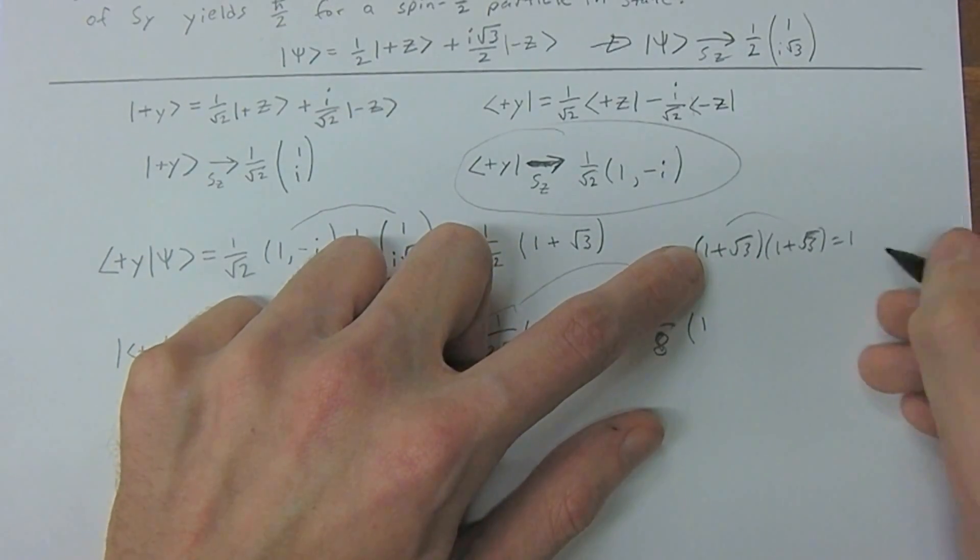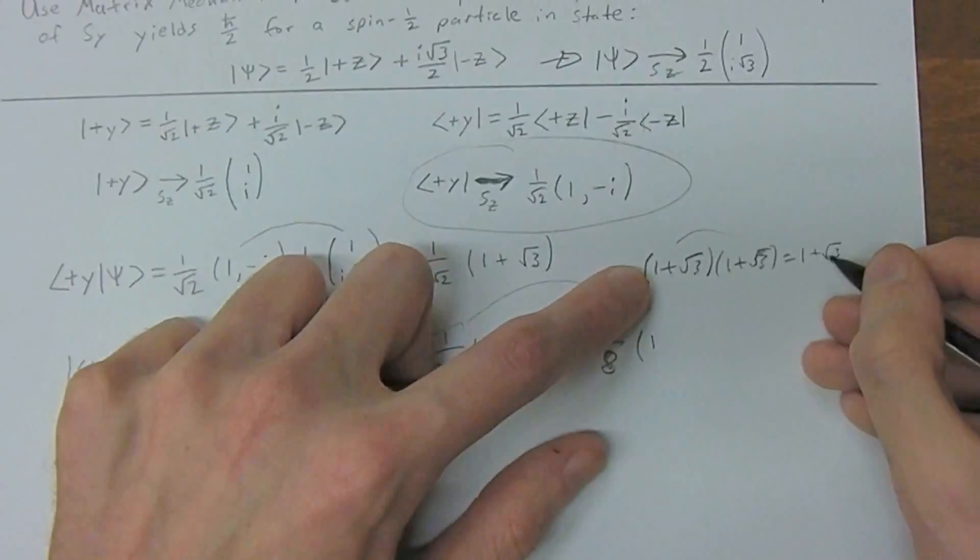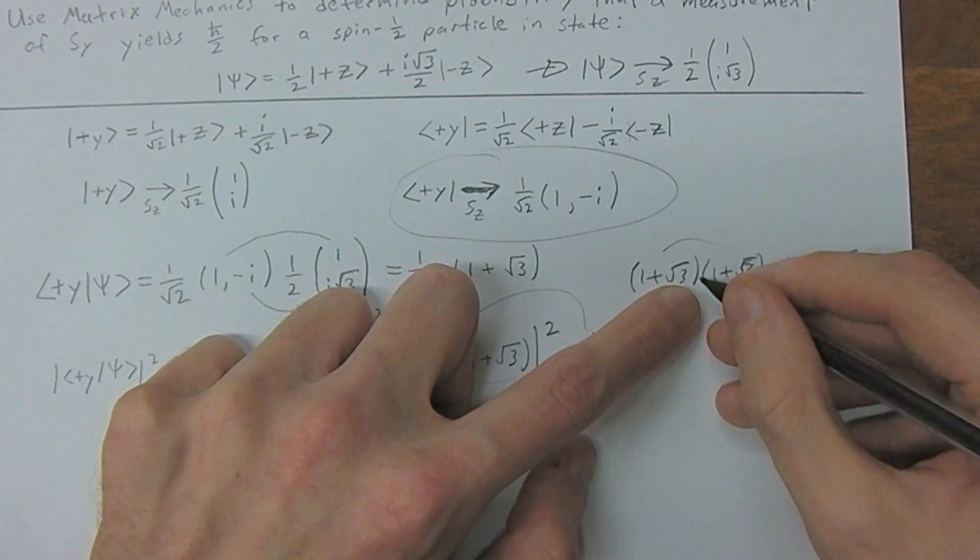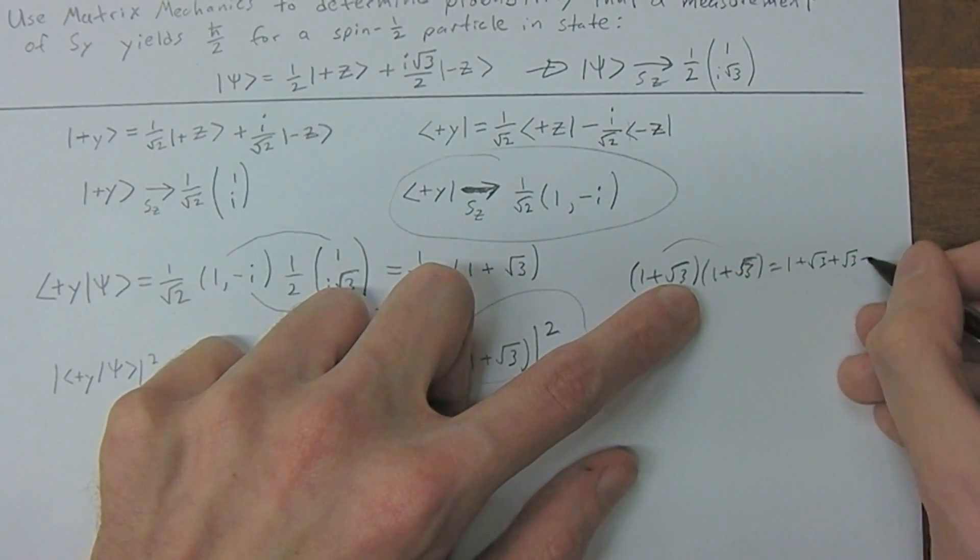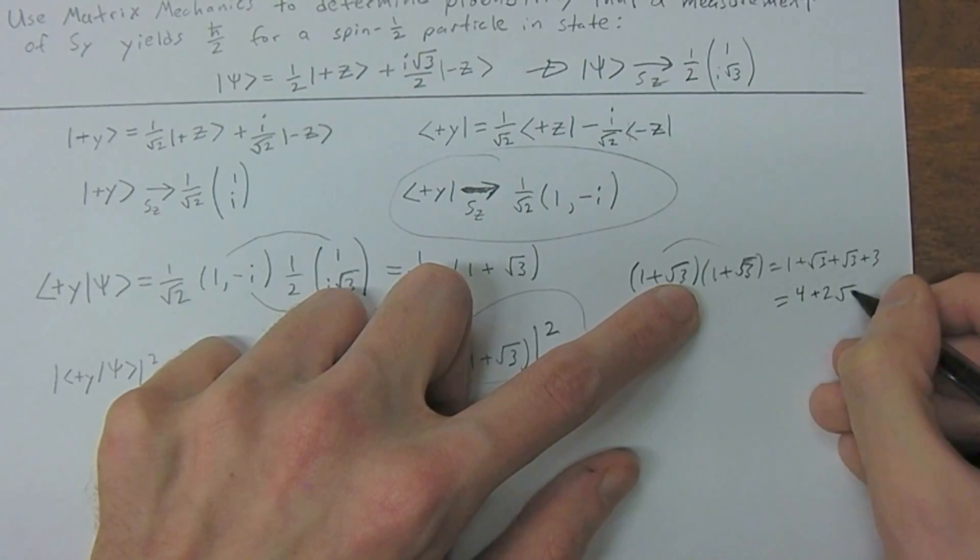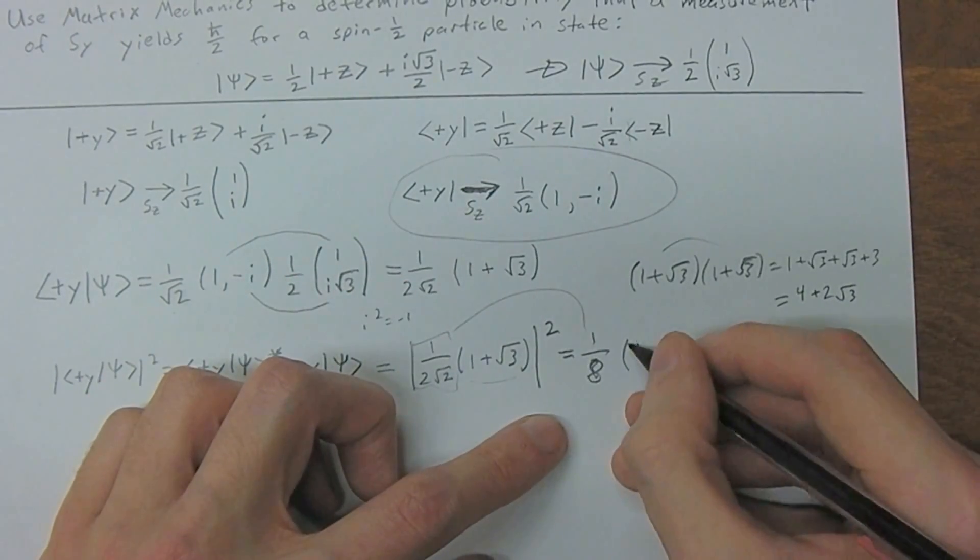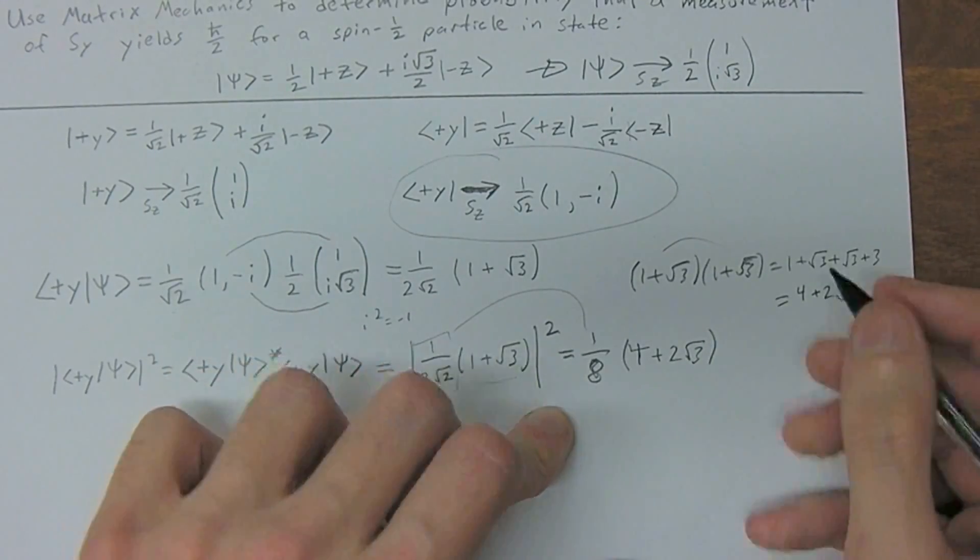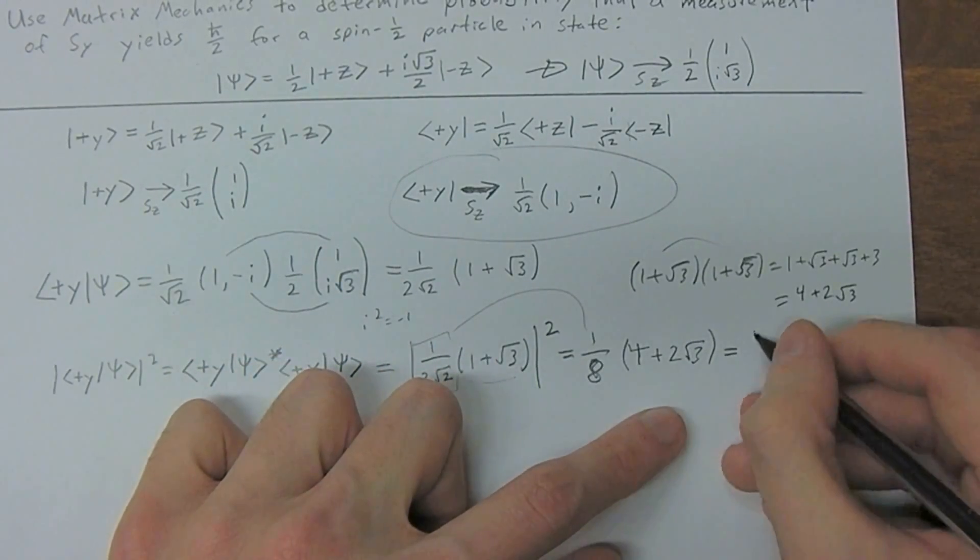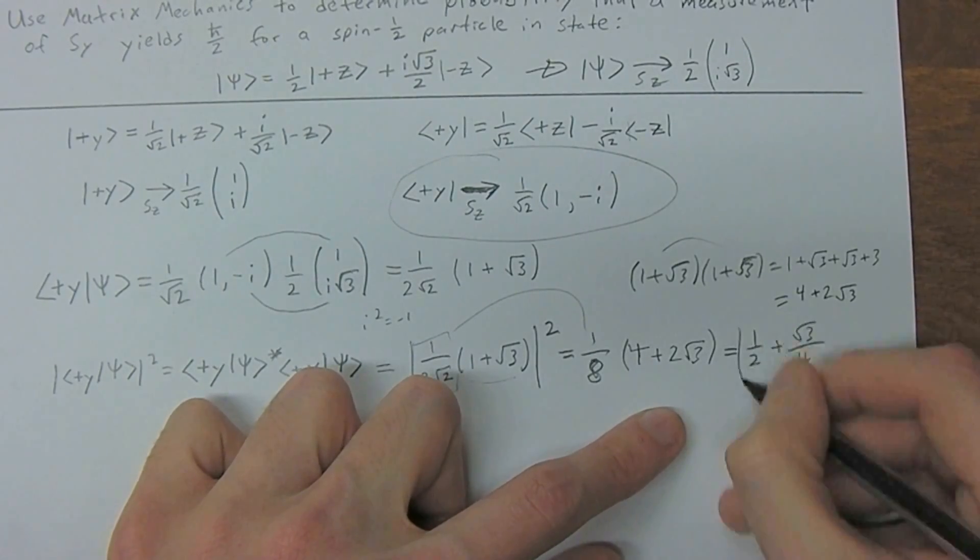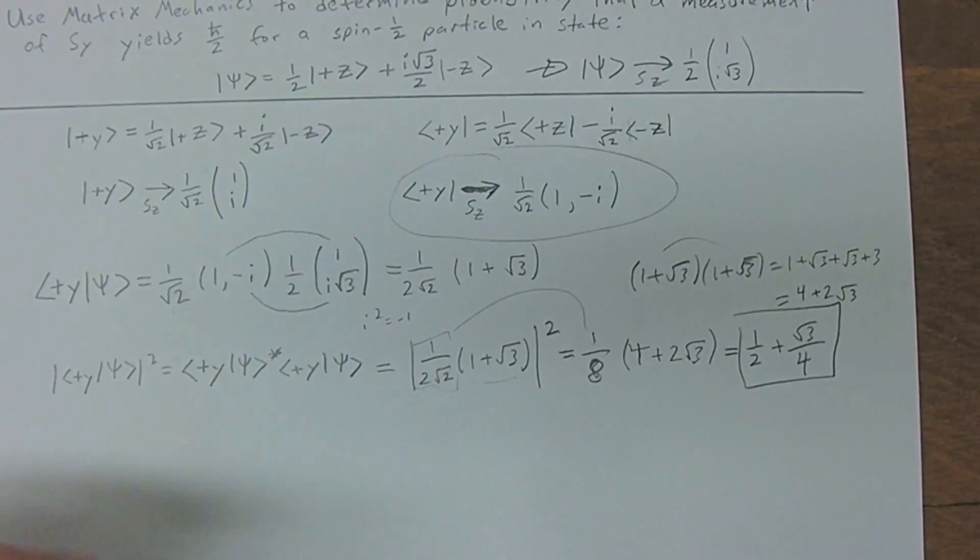so 1 times 1, 1 plus square root of 3 plus square root of 3 plus square root of 3 times square root of 3. So we're going to get 4 plus 2 square root of 3, and then we can simplify this again. So we're just going to get 1/2 plus square root of 3 over 4, which is the same as our previous example.